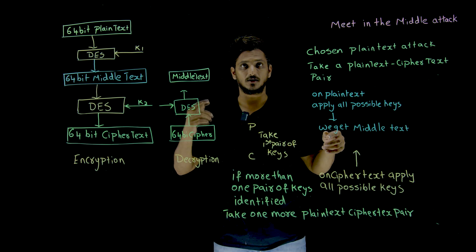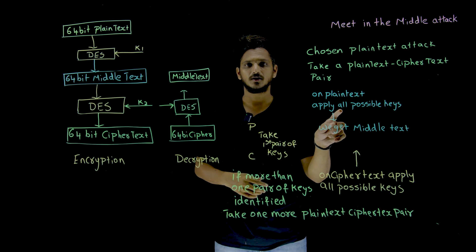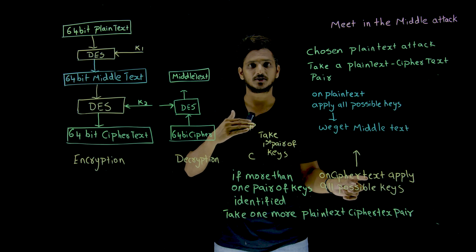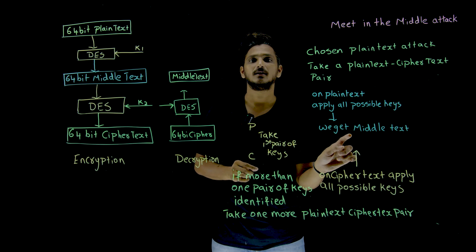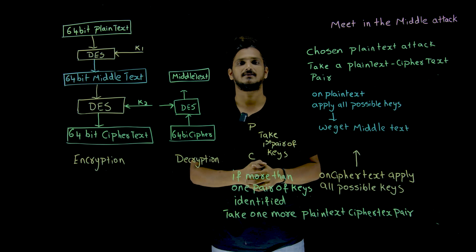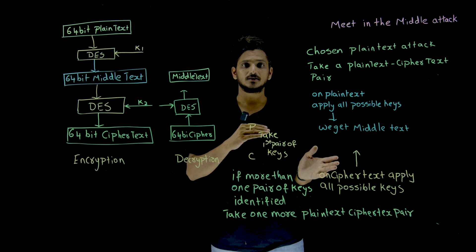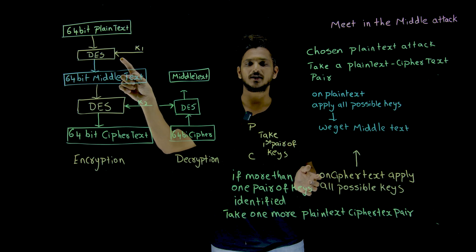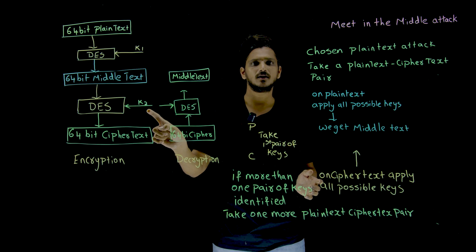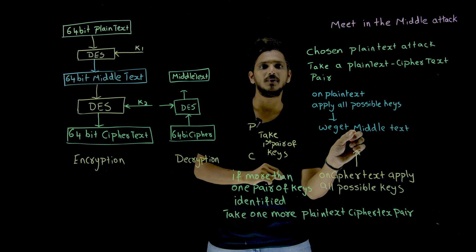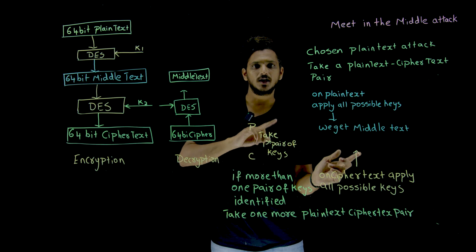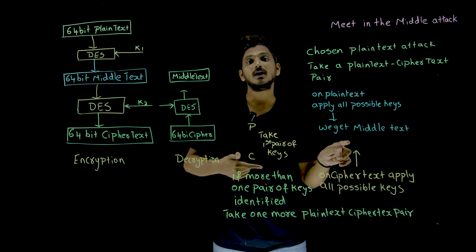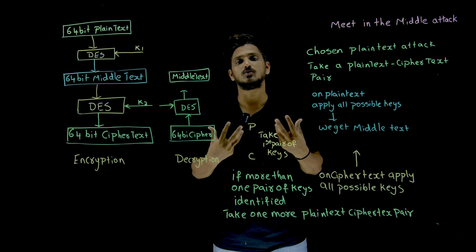From the middle text results, you applied different key possibilities on the plaintext side and different possibilities on the ciphertext side. Whichever key pair gives the same middle text from both sides is considered the actual key pair. For example, if K1 from the plaintext side and K2 from the ciphertext side produce the same middle text, those two keys are considered the actual keys.